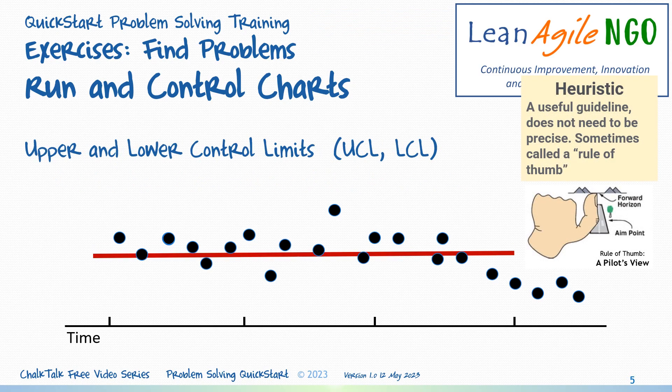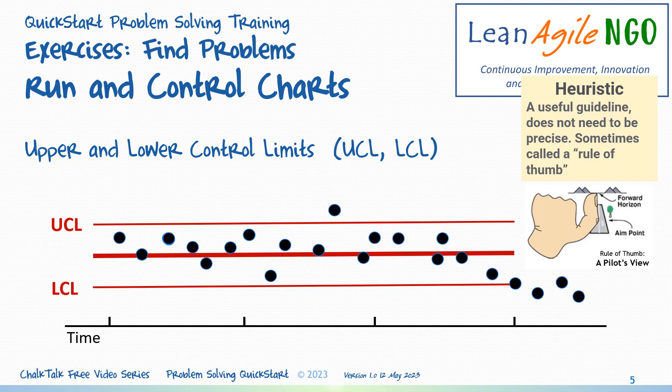Now let's apply a couple of heuristics to try to understand what we see. First, let's remember that any extreme measures are out of bounds — also called outliers, since they lie outside the range of acceptable performance. Now draw upper and lower control limit lines to fit the pattern. These lines describe the limits or tolerances of what is considered acceptable. The moment you draw these lines, this goes from being a run chart to a control chart.